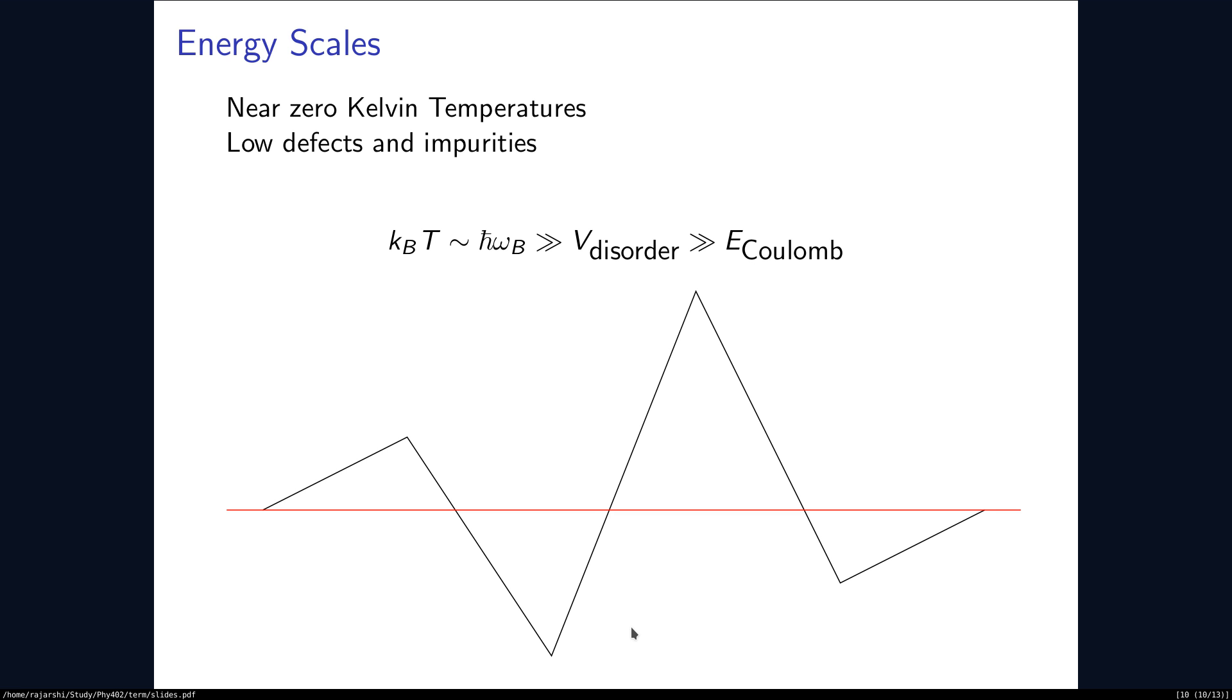What happens is that the V disorder forms crests and troughs. V disorder forms energy states which are very localized. Once an electron is in a trough, it is very difficult for it to get outside because it has to tunnel through. And because of this reason, the energy states created by the V disorder do not contribute to the conduction.